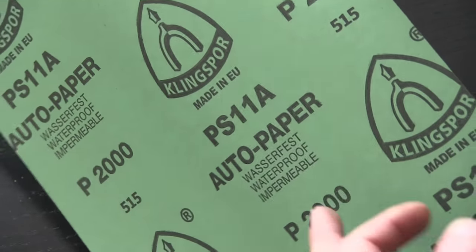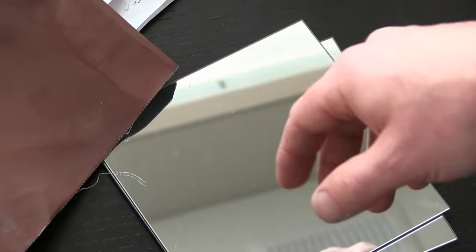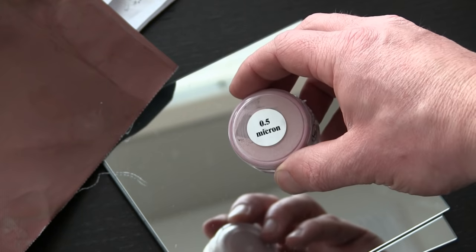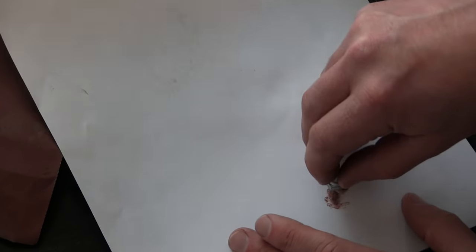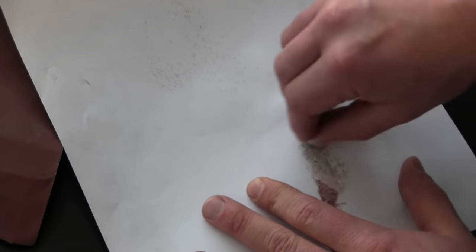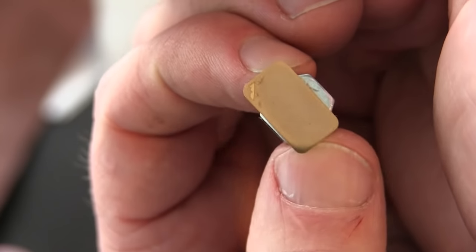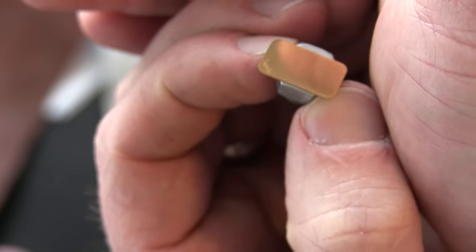The 2000 grit is around eight micron, and the crocus cloth just says fine, but I believe it's right around 3000. Big step here. Diamond paste, which is half a micron. We still got some big gouges in there, but it's very polished.